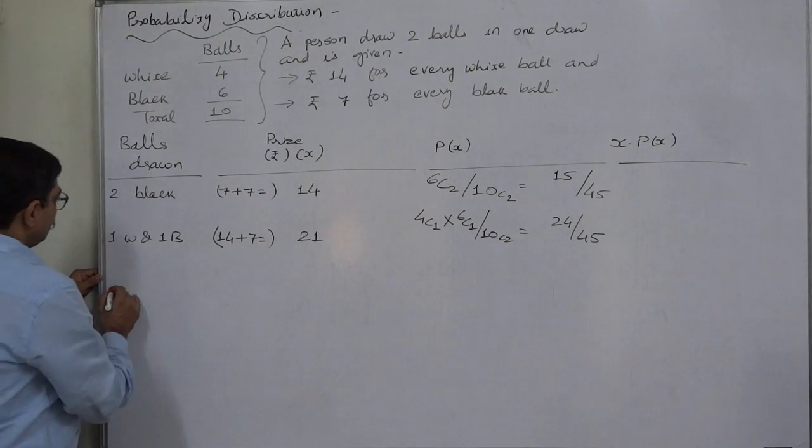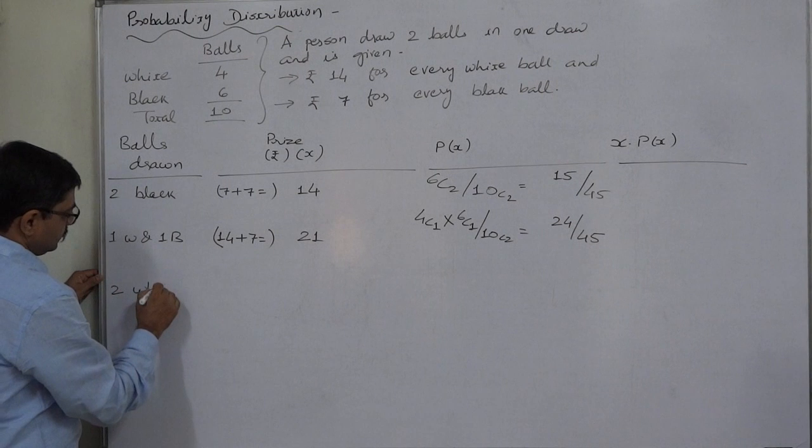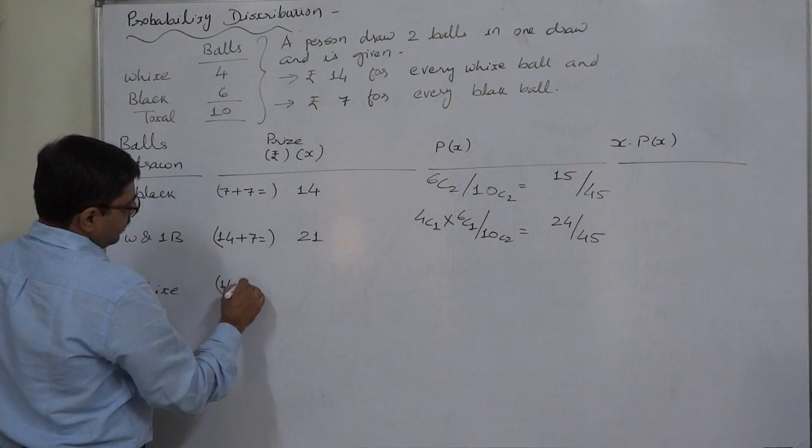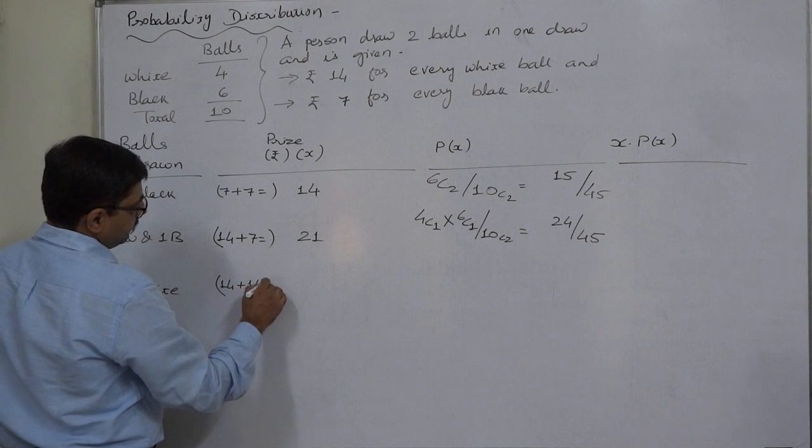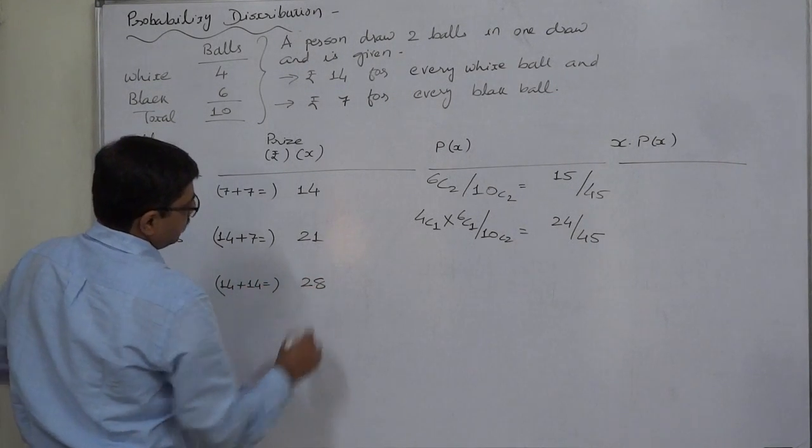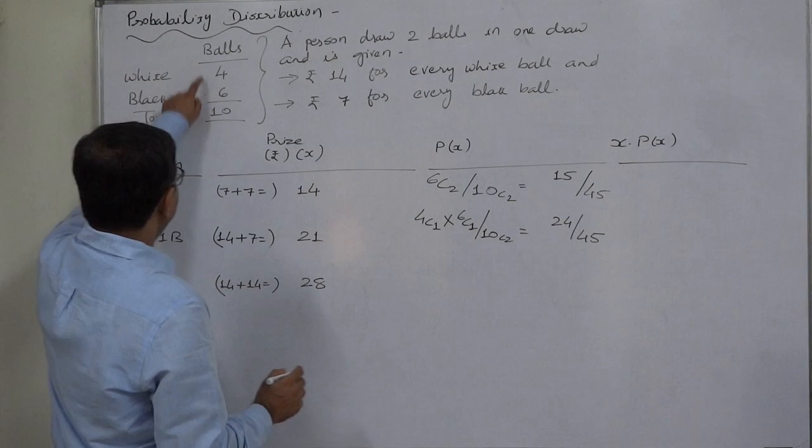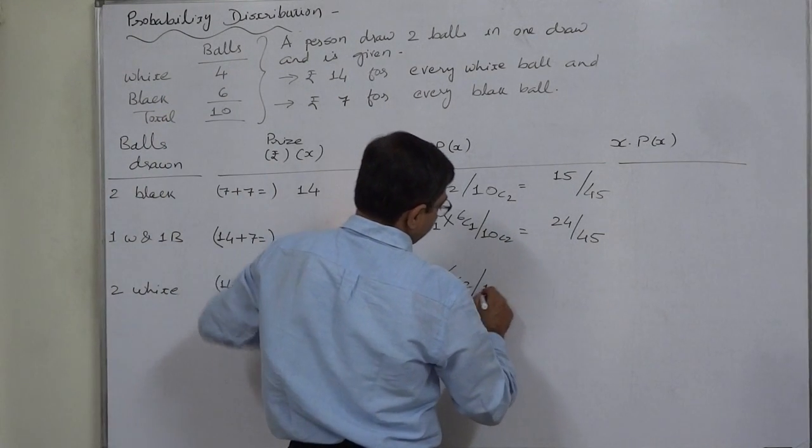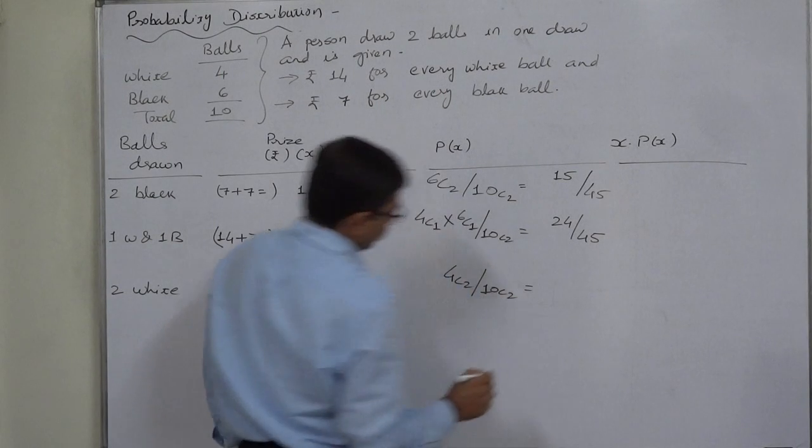The third case is 2 white balls. On 2 white balls he will receive 14 plus 14, rupees 28. How can it happen? 2 white out of 4, 4C2 by 10C2. 4C2 is 4 into 3 divided by 2, which is 6.